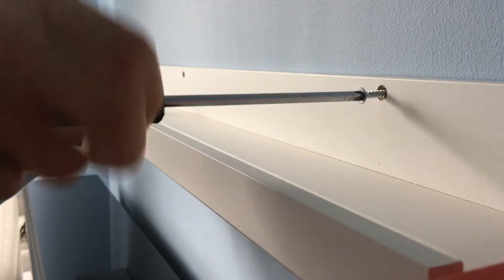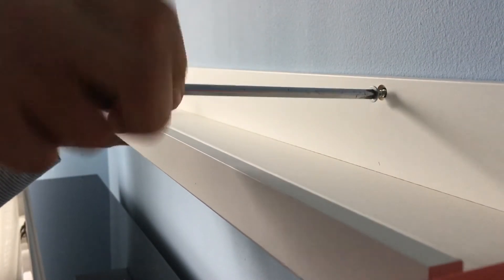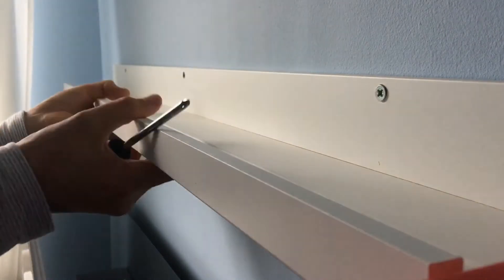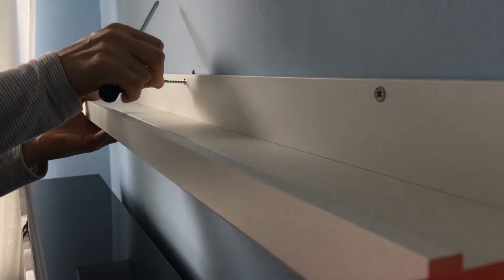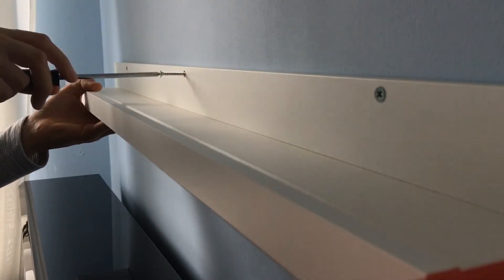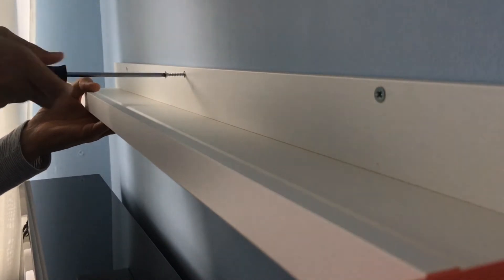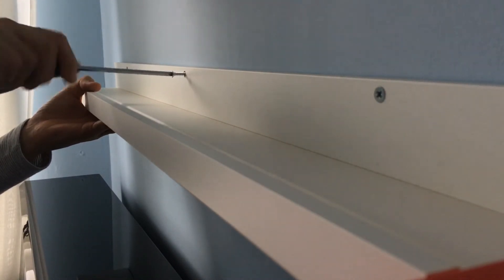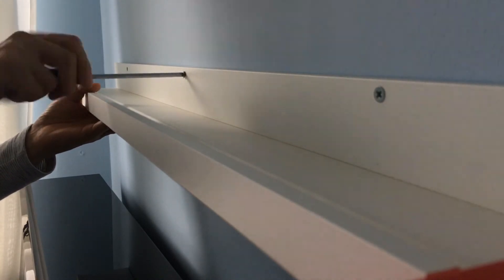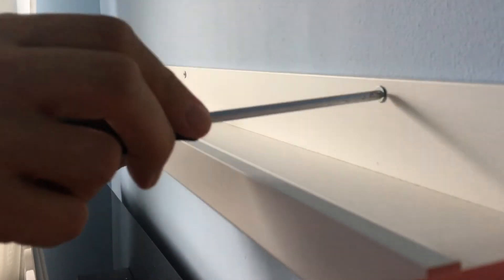So I ended up taking the wall plugs out because they weren't really very tight fixed onto the wall. So I've changed the wall plugs for a little bit bigger, and I've changed the screws as well for a bit longer, to make it very nice and tight so the picture ledge would be safe to be attached onto the wall.